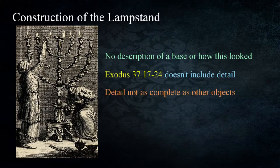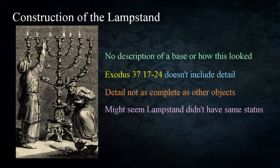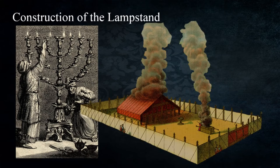This is very interesting considering the amount of information recorded regarding other objects such as the ark of the covenant and the mercy seat. The lack of a complete description might lead one to think the lampstand didn't have the same status as other objects at the tabernacle. We'll discuss this in more depth as we develop the study. What we can say is that it was a priceless object made entirely of gold.